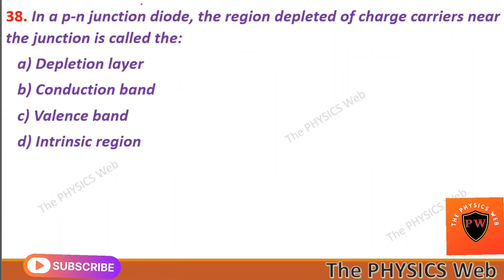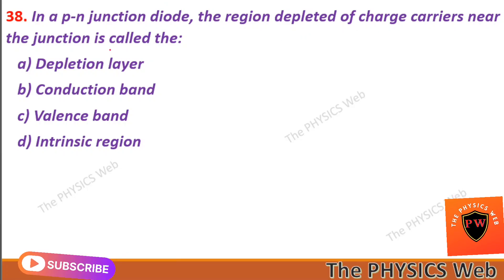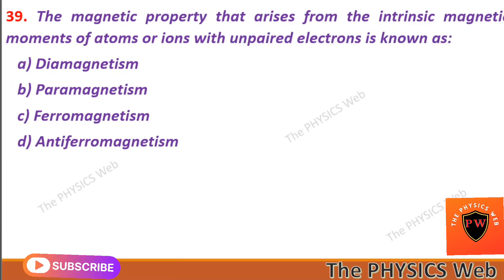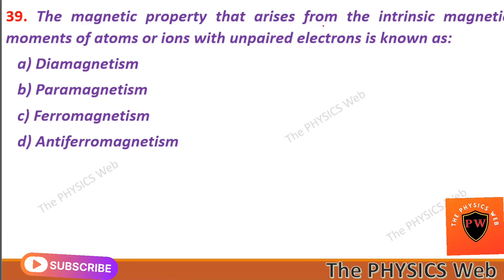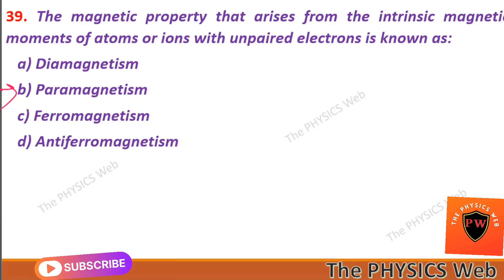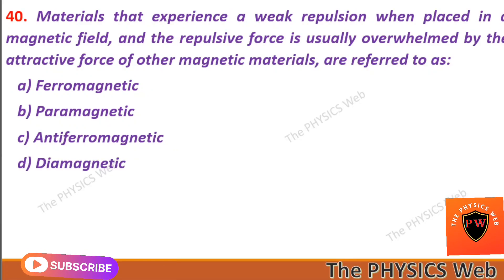Next, question thirty-eight: in a PN junction diode, the region depleted of charge carriers near the junction is called the depletion layer. So A is your correct option. Question thirty-nine: the magnetic property that arises from the intrinsic magnetic moments of atoms or ions with unpaired electrons is known as paramagnetism. So B is your correct option.